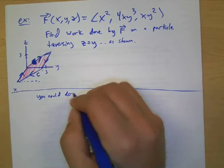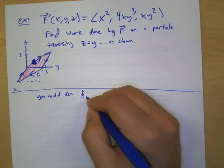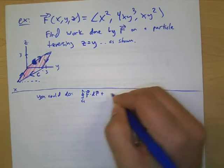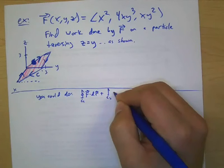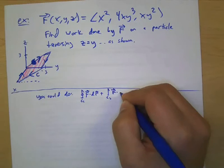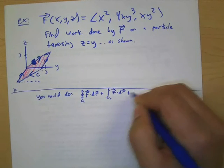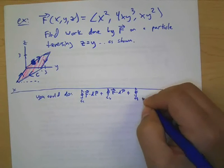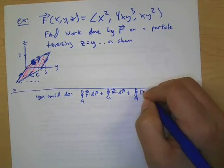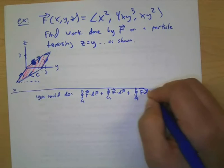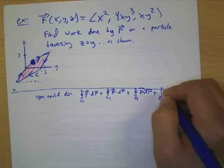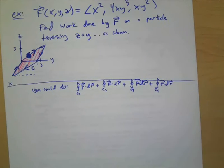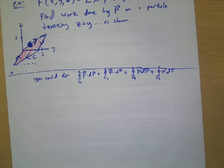The alternate would be to parameterize these four paths and do four separate line integrals and then find the sum. Okay, that's not what we're going to do, but that would be the other option.